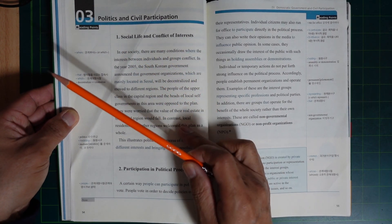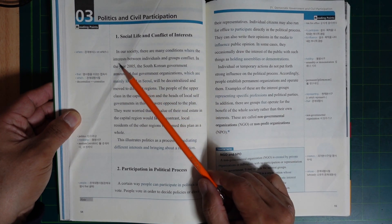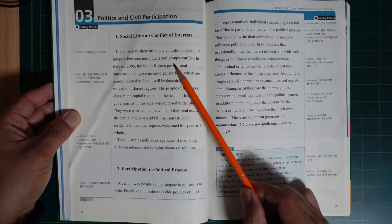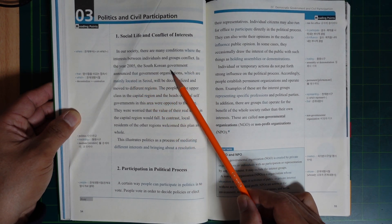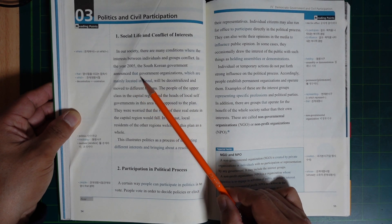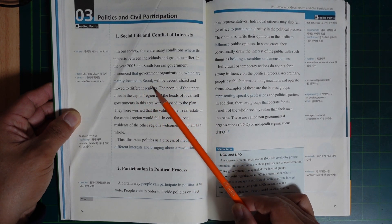Social life and conflict of interest. In our society there are many conditions where the interests between individuals and groups conflict. In the year 2005, the South Korea government announced that government organizations which are mainly located in Seoul will be...